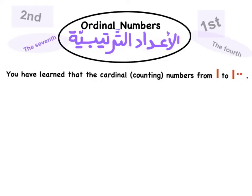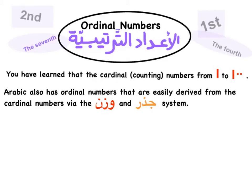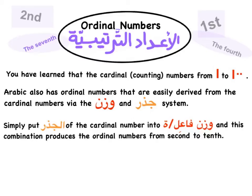While studying Arabic, you have learned that the cardinal numbers are the counting numbers, like numbers from one to hundred — من واحد إلى مئة. Arabic also has ordinal numbers that are easily derived from the cardinal numbers via the وزن and جذر system. Simply put, the جذر of the cardinal number is put into the pattern فاعل, or فاعلة in the feminine, and this combination produces the ordinal numbers from second to tenth. Now let's look at how we do that.